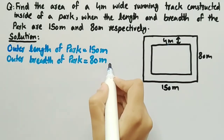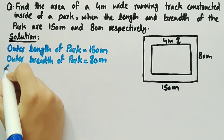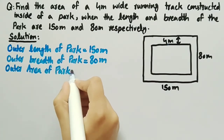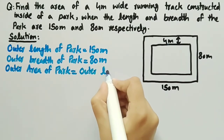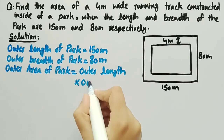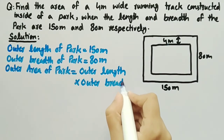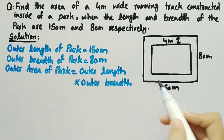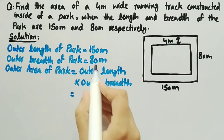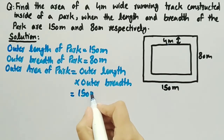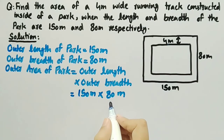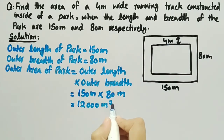Since we have the outer length and outer breadth of the park, we can find the outer area of park, which is equal to outer length multiplied by outer breadth. The outer area of park means the area of the whole park including the running track, and it is equal to 150 meter multiplied by 80 meter, which equals 12,000 meter square.